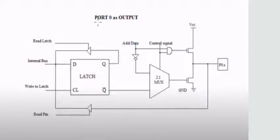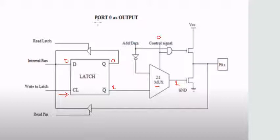Let us discuss about how to configure Port 0 as an output port. If you want to configure Port 0 as output port, we have to write a 0 to the latch. If we enable the latch, we get a 0 at Q and Q-bar equals 1. When Port 0 is acting as an input-output port, the control signal must equal 0. We will be getting a 1 through the 2-to-1 mux, and a 0 at this FET. So this FET acts as an open switch, and the other one acts as a closed switch. When we measure the voltage at this point, it will equal 0.